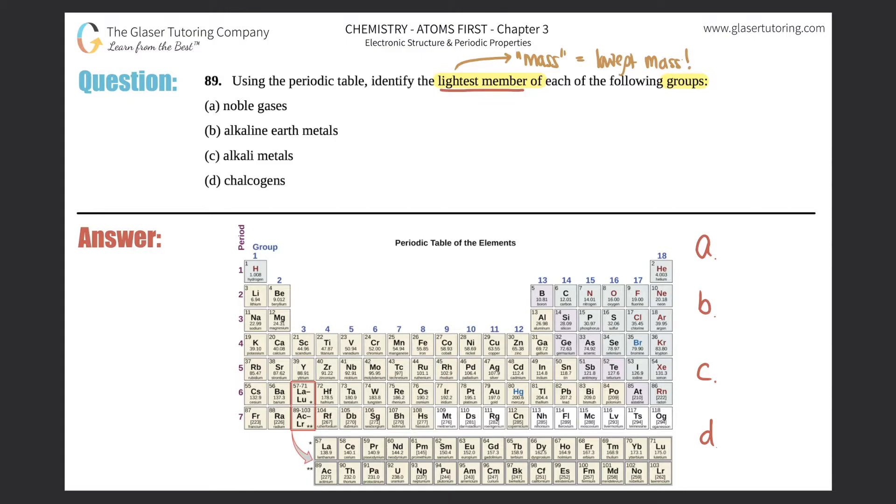For A, where are your noble gases? This is something you have to memorize on the periodic table. There's never going to be any trends or classifications listed. Noble gases are Group 18, this group right here. Groups go up and down, so this group over here are your noble gases.